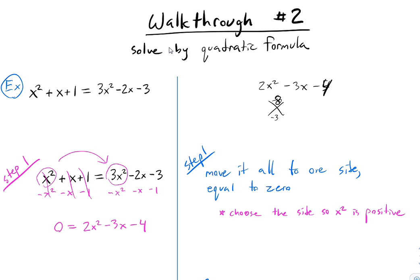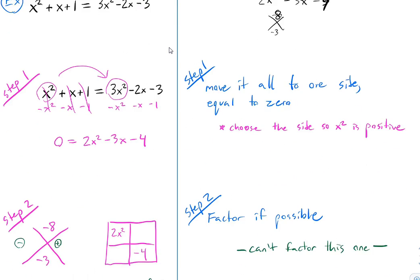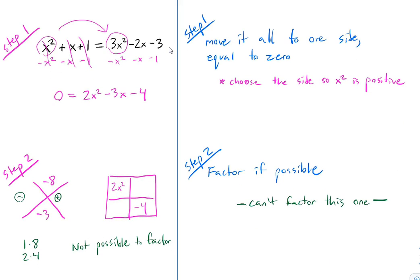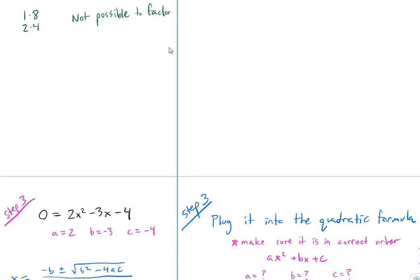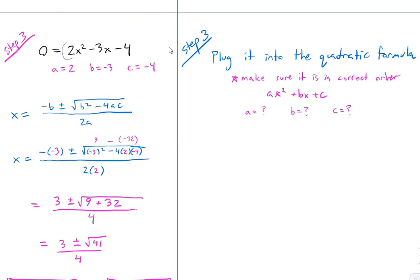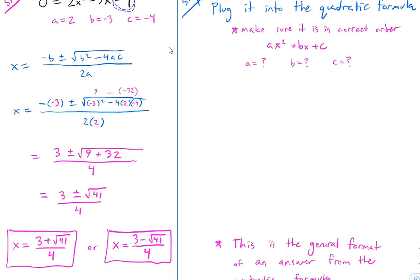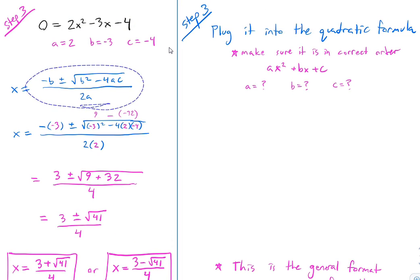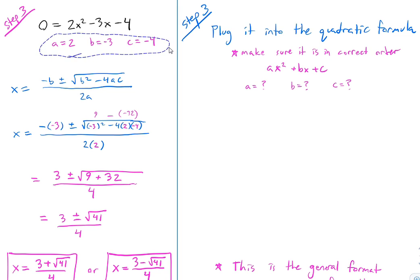Three steps. First step: move it all to one side. I choose the side where x squared will be positive. So I have minus x squared, minus x, minus 1 from both sides. Now it's on one side equals zero. Step two: factor if possible. This one couldn't be factored. So step three: plug into the formula. In this case a is 2, b is negative 3, c is negative 4. I write empty parentheses everywhere there's a letter, then fill in the values — that way you don't make negative sign mistakes.